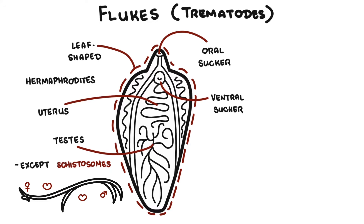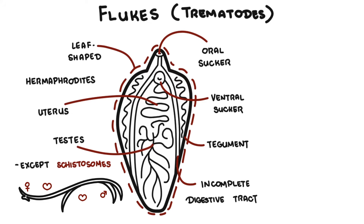The mouth openings form their digestive tract, which ends blindly, so trematodes have an incomplete digestive tract and usually regurgitate things back out. Their bodies are covered with tegument, which is armed with scale-like spines. The tegument allows for absorption of nutrients and excretion of waste. The two suckers allow the adult worm to attach and move around in the definitive host, such as humans, attaching to organs such as the lungs, liver, and stomach.